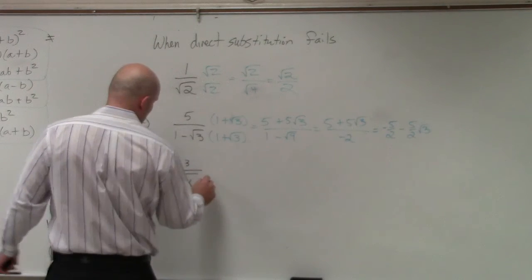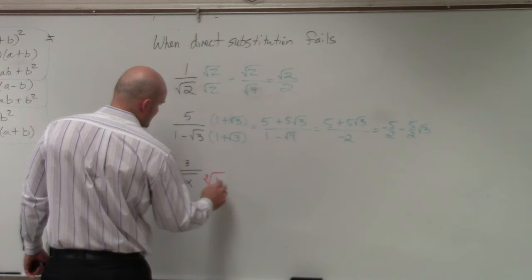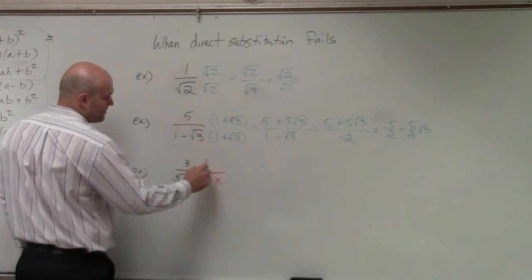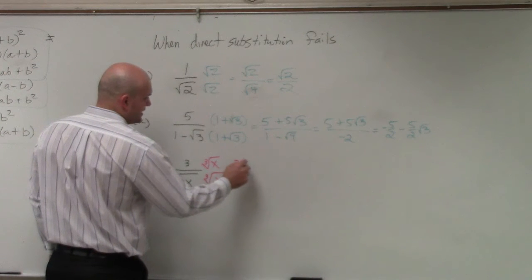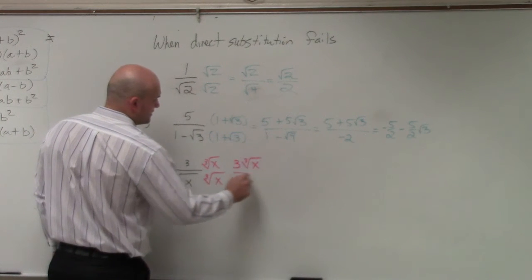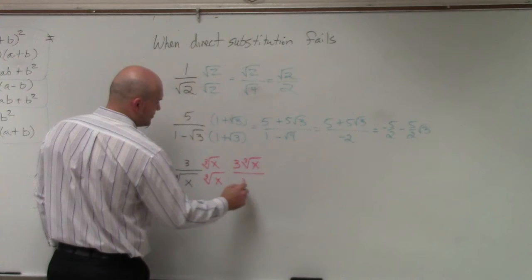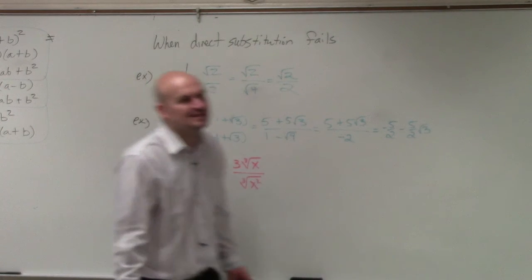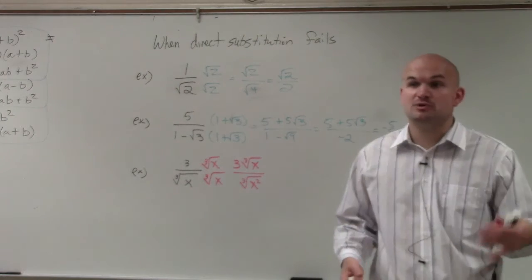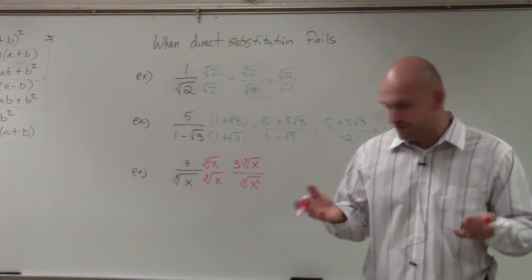We can't just take the cube root of x on top and bottom. Because if you just multiply by the cube root of x, you're going to get 3 cube root of x divided by the cube root of x squared. We can't take the cube root of x squared - we can only take the cube root of x to the third power.